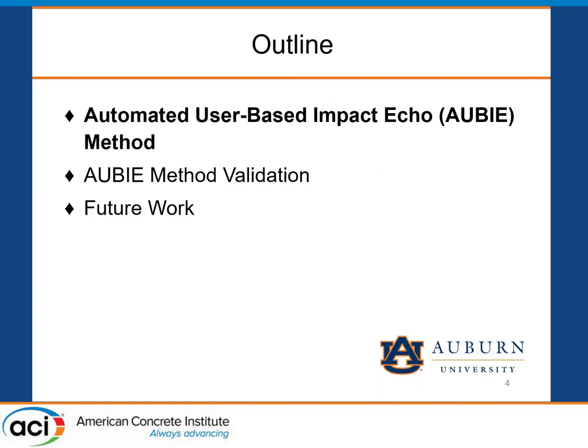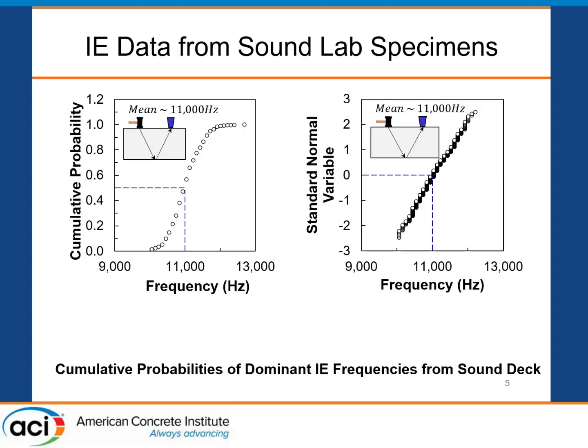I call this the Automated User-Based Impact Echo method — or AUBIE, for Auburn. We'll talk about what this method actually is, then look at some of the validation we did afterward: does it work, and where do we go from here?